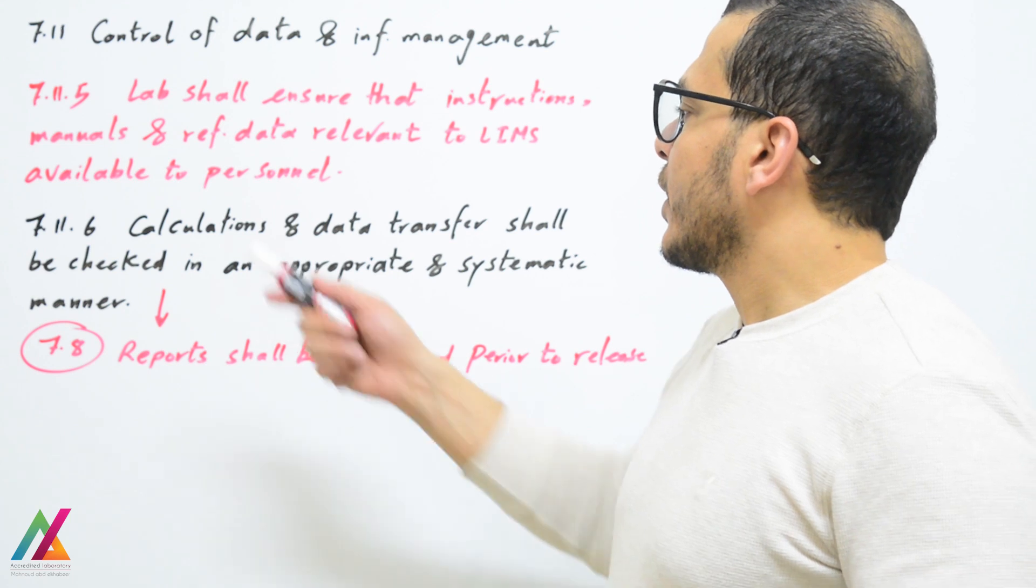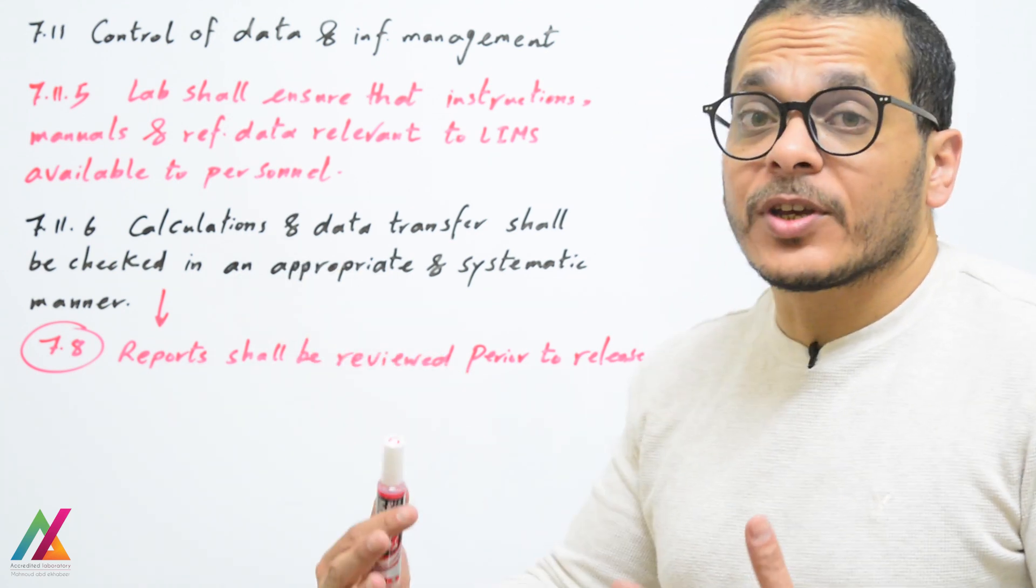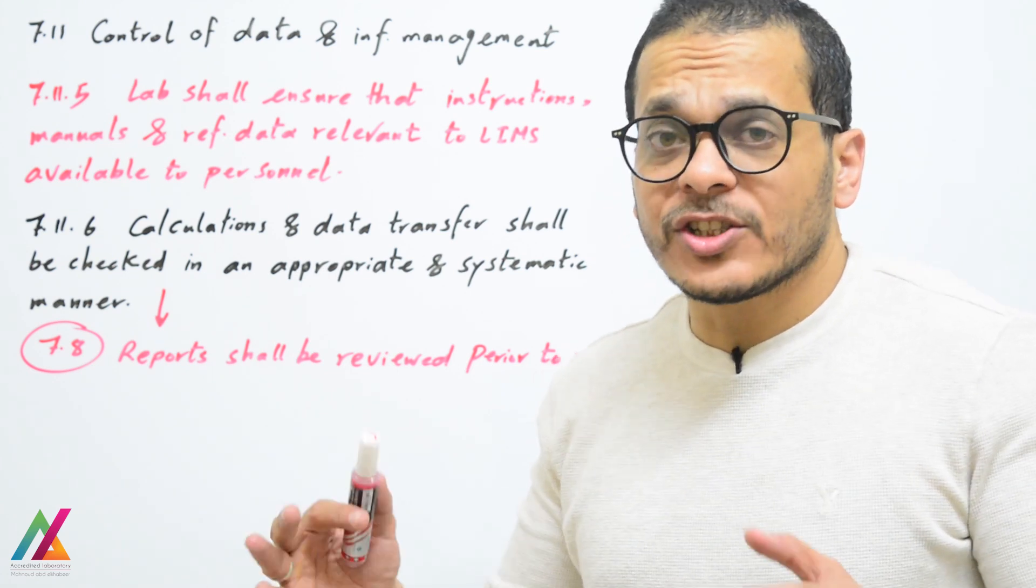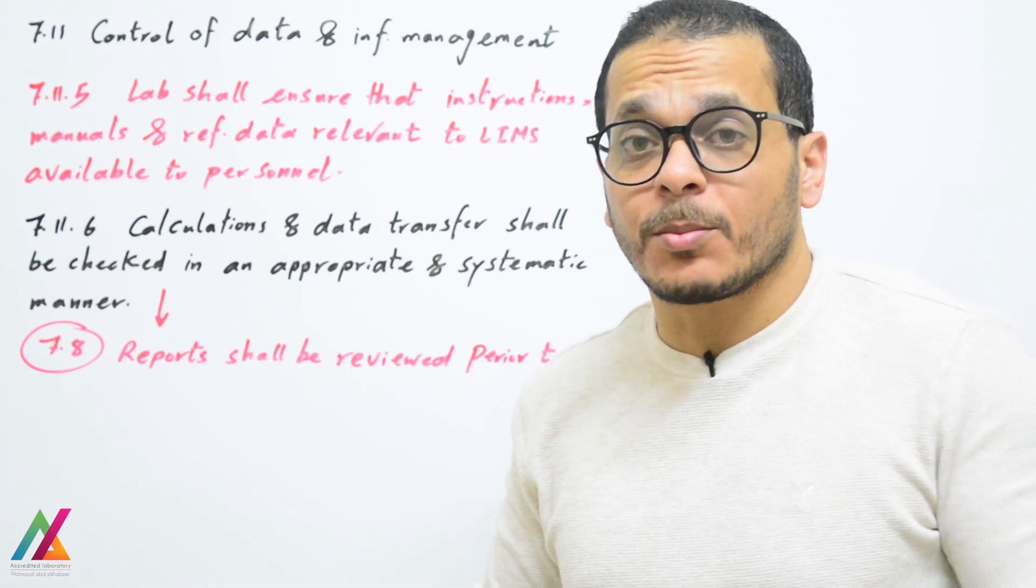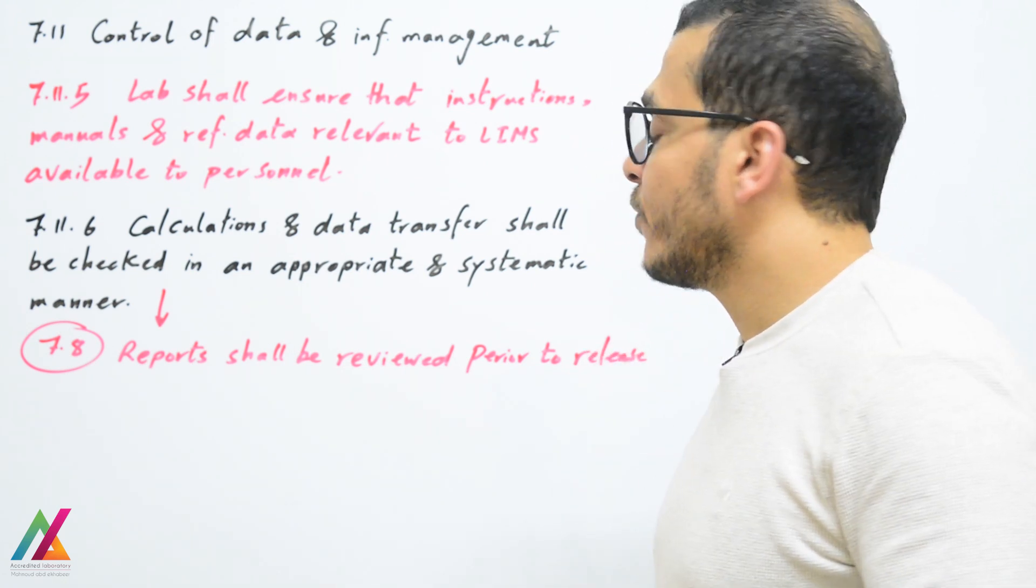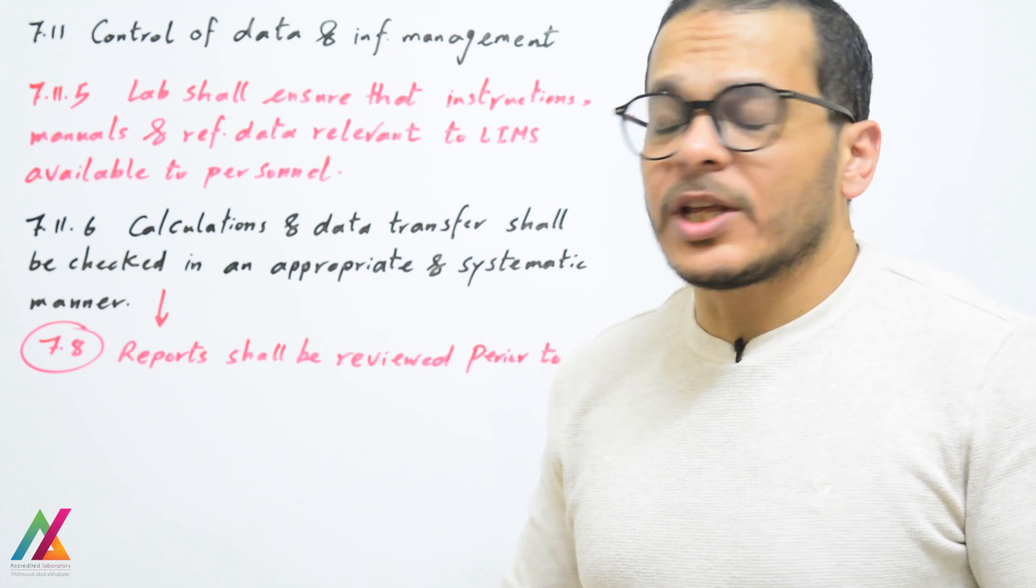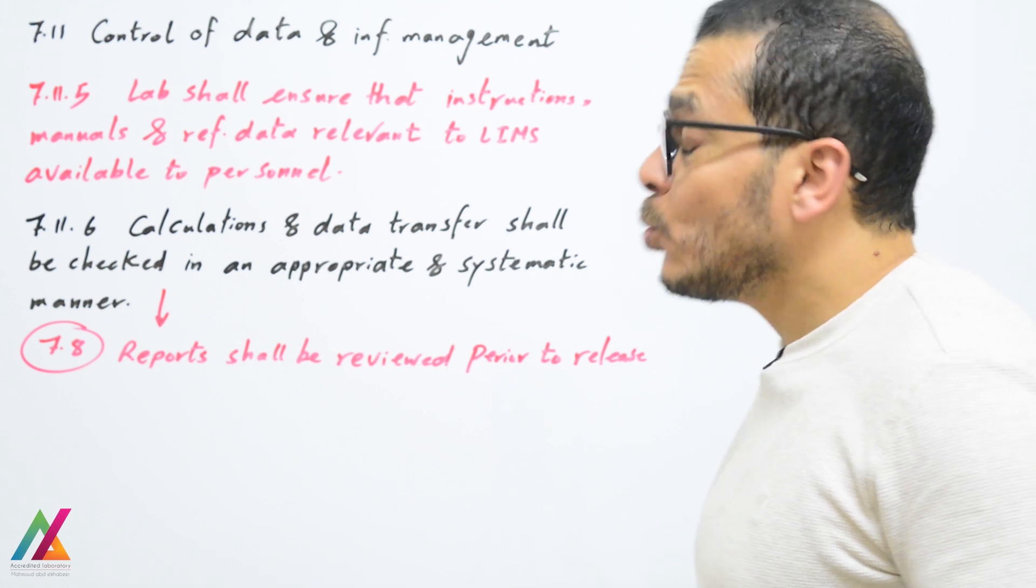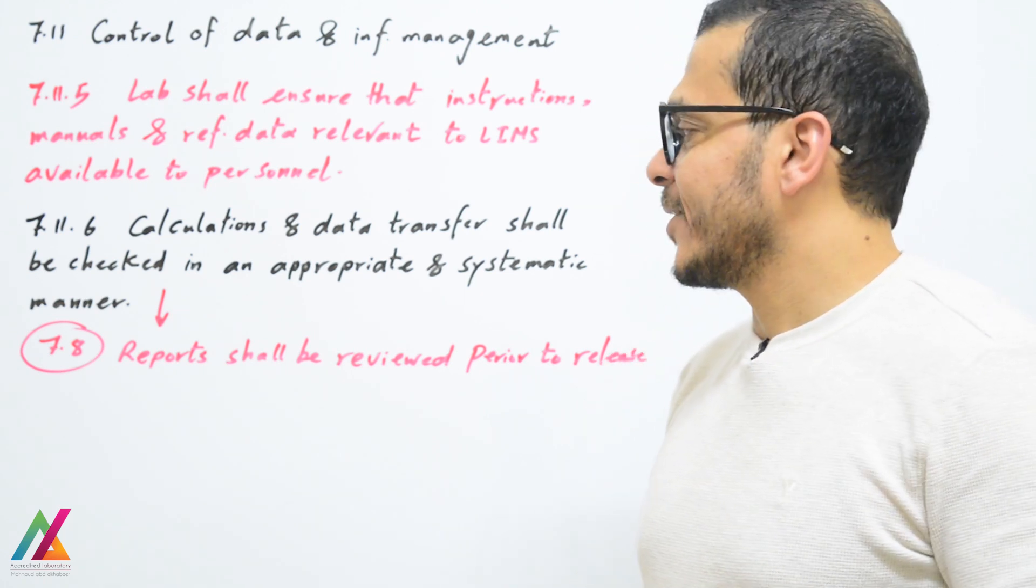Calculations and data transfer shall be checked in an appropriate and systematic manner. All calculations shall be revised before submitting results and finally revised by the technical lead of the unit to ensure the integrity of data. As mentioned before in clause 7.8, reports shall be reviewed prior to release.